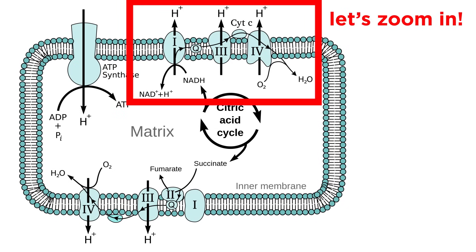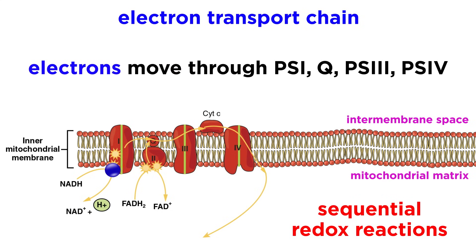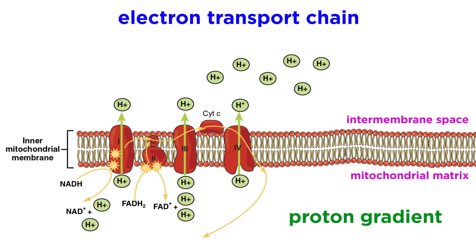Once NADH feeds electrons into the first component of complex one, these proteins facilitate a series of redox reactions, shuttling the electrons downhill from one component to another, with each structure down the chain having a higher affinity for electrons than the last. This process does not generate ATP directly, but a byproduct of this series of electron transfers is the generation of a proton gradient across the membrane. Protons accumulate outside of the inner mitochondrial membrane.